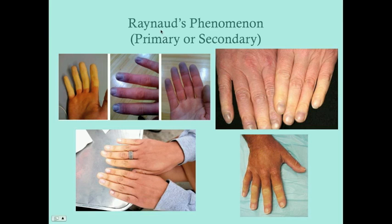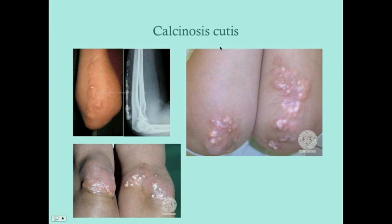Raynaud's phenomenon can be an entity in itself, not related to CREST syndrome, but it can also be part of other clinical entities — not simply CREST syndrome. Here is calcinosis — the C in CREST syndrome. These images show dramatic presentations, but it doesn't tend to be this dramatic in most patients. Calcinosis tends to follow tendons, as you can see on this x-ray where it follows a tendon of one of the forearm muscles.